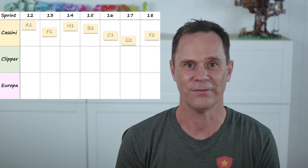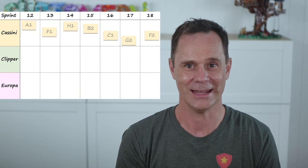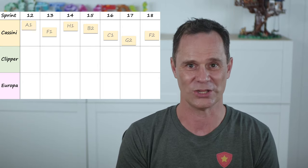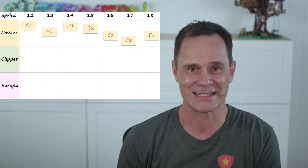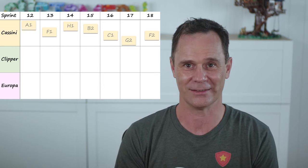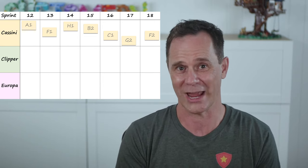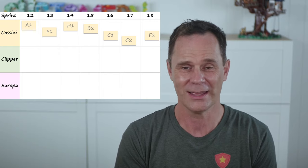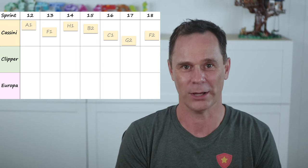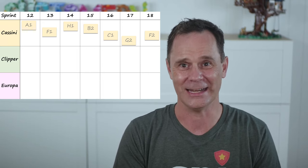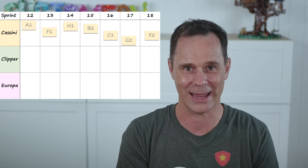Next, place the features that each team is going to build in the column representing the sprint in which it plans to finish the feature. I messed this up initially, thinking it's the sprint in which we plan to start working on the feature. But if you look at this example, knowing that Cassini is going to start on feature A1 in sprint 12, that doesn't tell Clipper or Europa anything about when A1 will be done. Cassini needs to forecast when they'll complete A1.